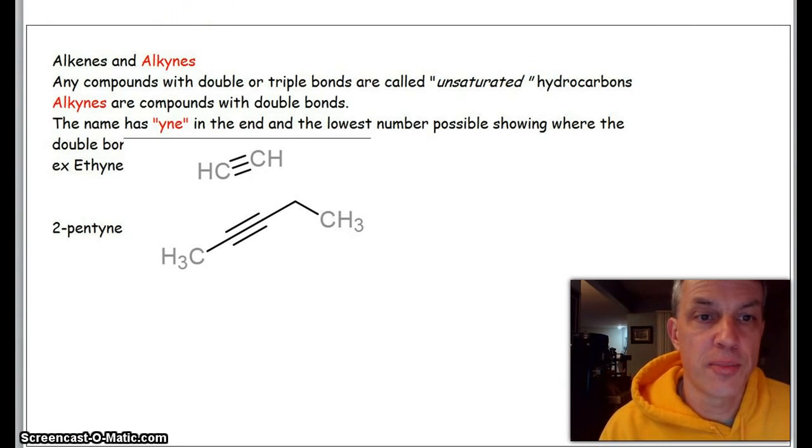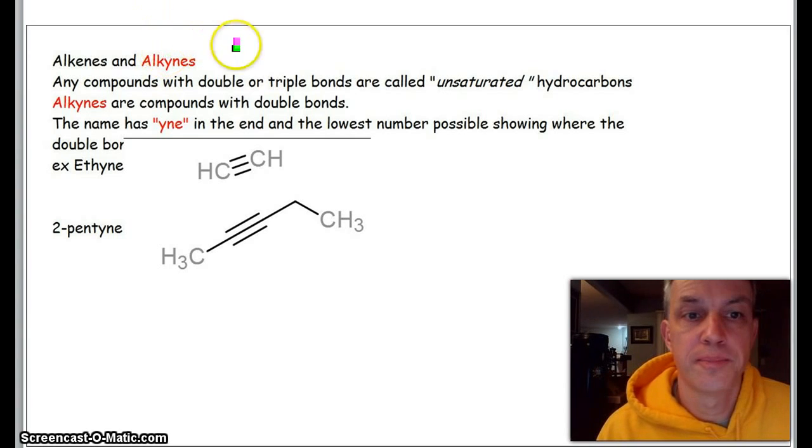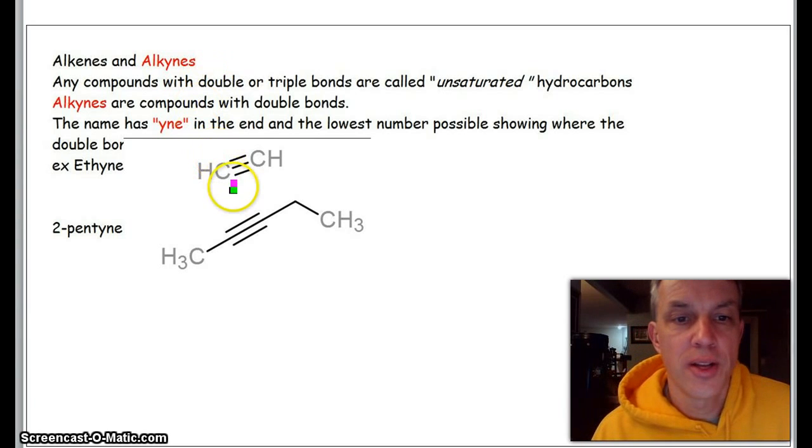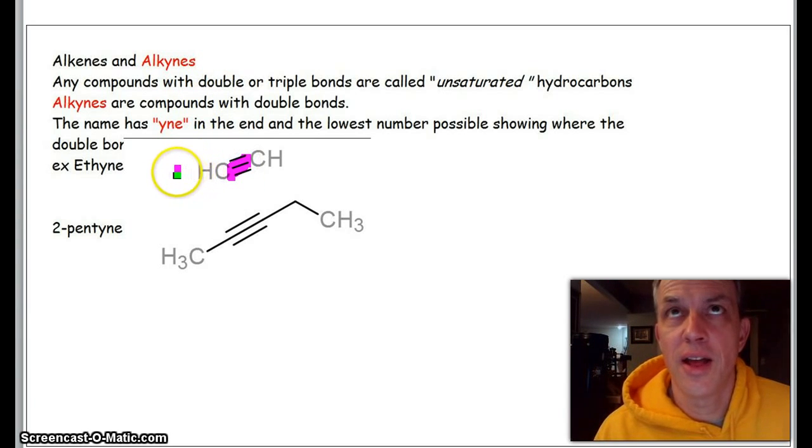Now here's another example. So now, instead of the double bond, you could have a triple bond as well. A triple bond right here—this would be called, instead of an alkene, it's alkyne, ending in -yne.